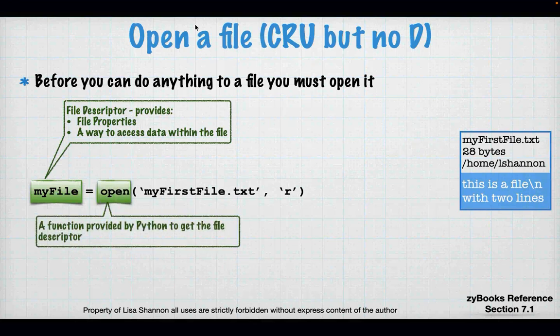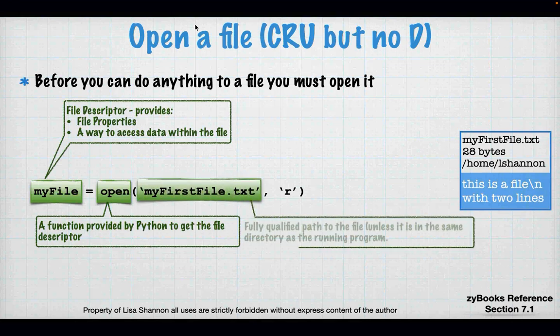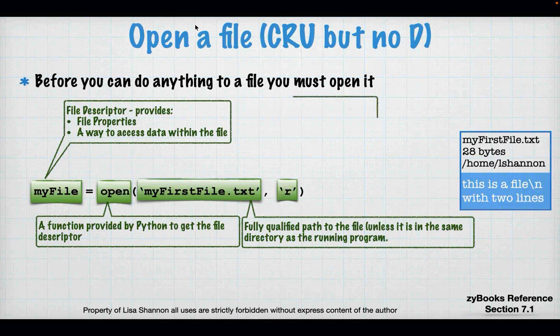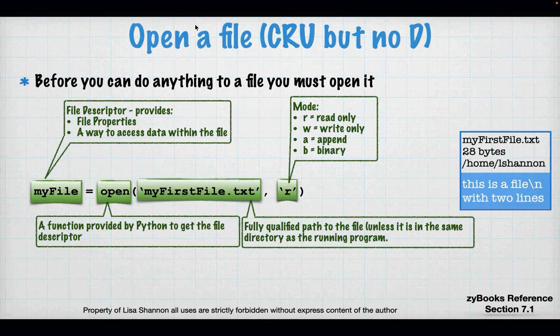Open is the function, and it provides that file descriptor. The first argument in that function is the name of the file. In this case the name doesn't have a directory structure, but you will often have to give it a fully qualified file name, which means having the directory structure there or having Python create the directory structure. And then there is the mode. There are four modes: read-only, write-only, append, and binary. These can be combined and they simply tell the operating system what you're going to do with the file.